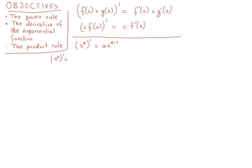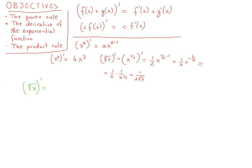Now we can ask questions such as: what is the derivative of the square root of x? We write square root of x as x to the one-half, so the derivative of x to the one-half will be one-half times x to the power one-half minus one, which is negative one-half. This can be written as one-half x to the negative one-half, which is the same thing as one over two square root of x. So the derivative of square root of x is one over two square root of x.